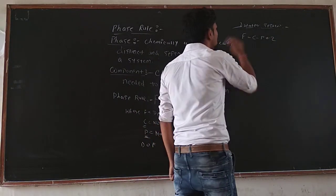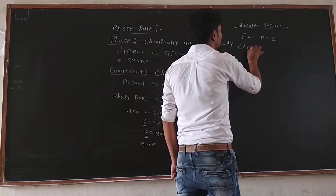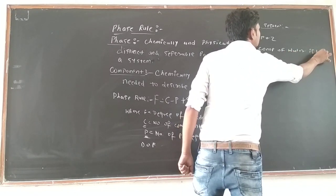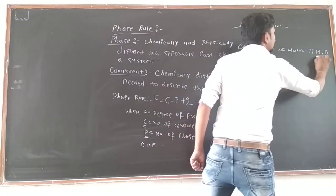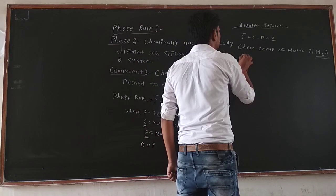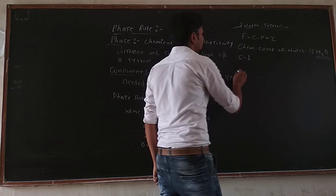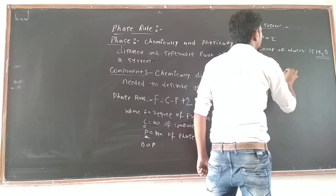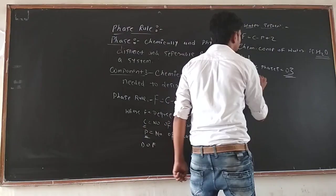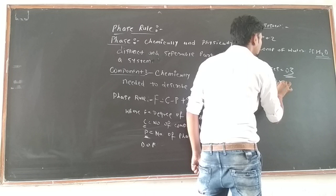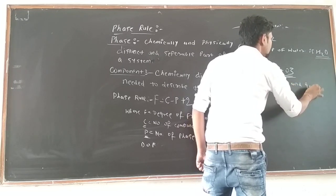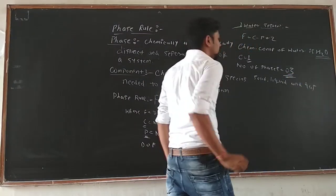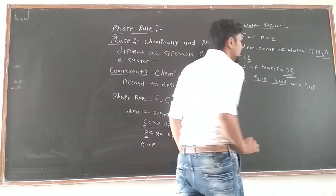In the water system, the chemical composition of water is H₂O, meaning the water system consists of only one component — C = 1. The number of phases present in the water system is three: solid, liquid, and gas.